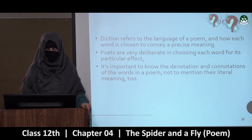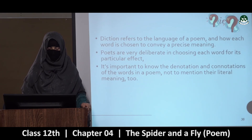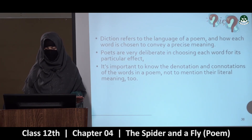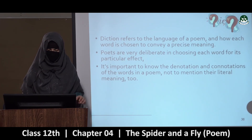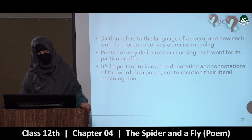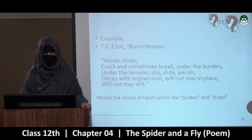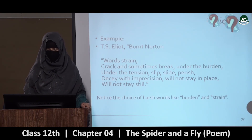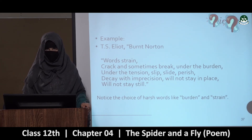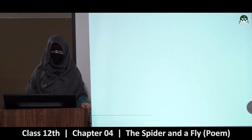Diction — diction refers to the language of a poem and how each word is chosen to convey a precise meaning. It's the language of the poem, aur phir jo hai woh kitne soche samajh ke ek ek word woh poem leta hai taaki woh precise meaning de sake. Words are very deliberate in choosing each word for its particular effect. T.S. Eliot ka jo hai woh 'Burnt Norton': 'Word strain, crack and sometimes break under the burden, under the tension, slip, slide, perish, decay with imprecision, will not stay in place, will not stay still.' Harsh words jo hain — burden or strain aapko yahan milte hain.